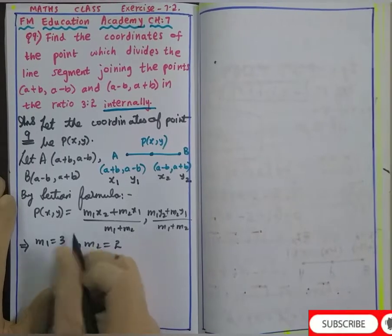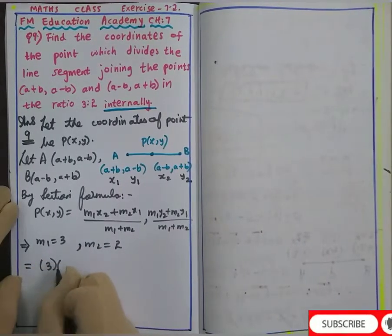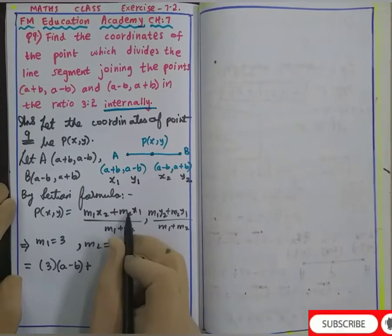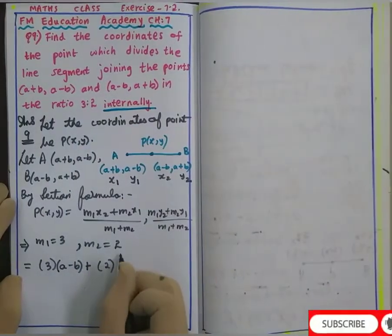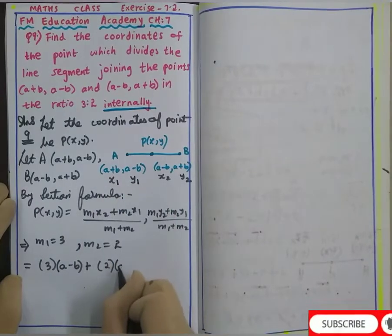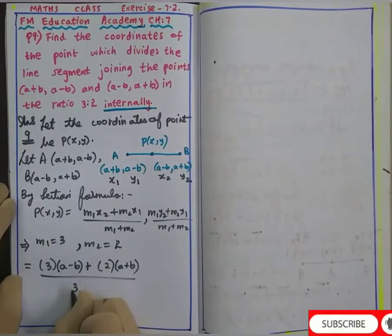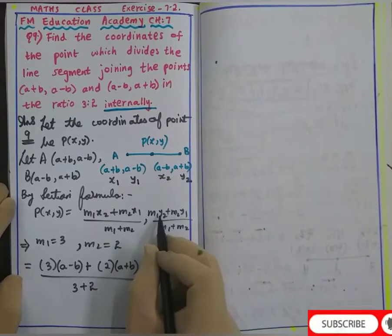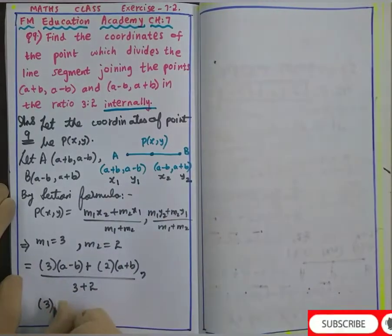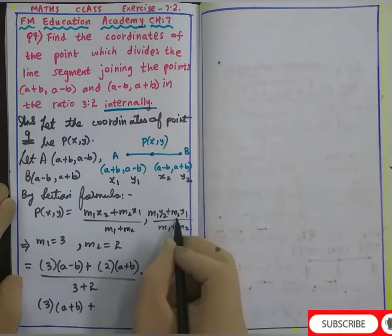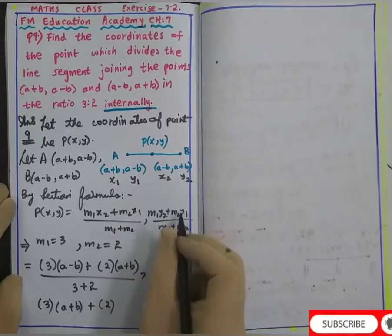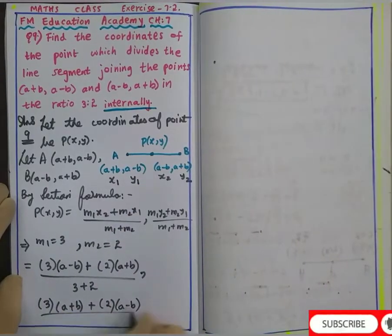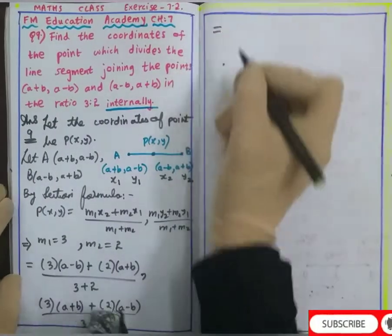Just substitute in the formula: m1 is 3 times x2 which is (a-b) plus m2 is 2 times x1 which is (a+b) by m1 + m2 which is 3 + 2. Comma, m1 is 3 times y2 which is (a+b) plus m2 is 2 times y1 which is (a-b) by m1 + m2, that is 3 + 2.